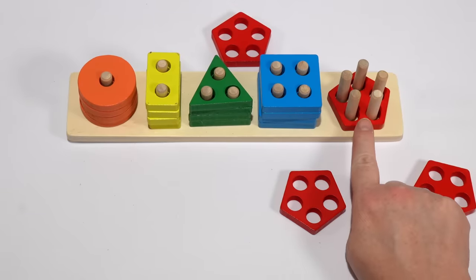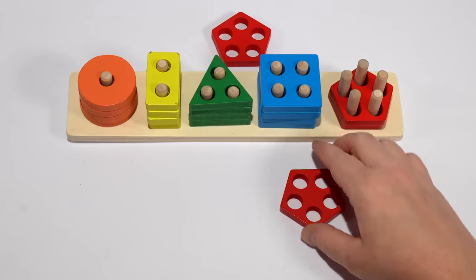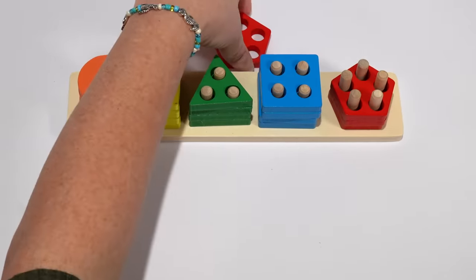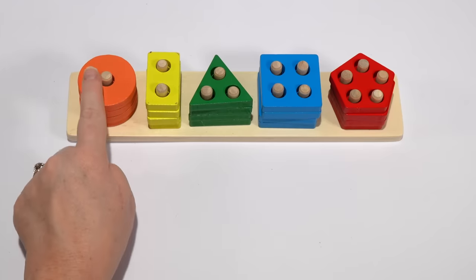And our last shape is a pentagon. And we have one, two, three, four pentagons. So we have an orange circle with one hole.